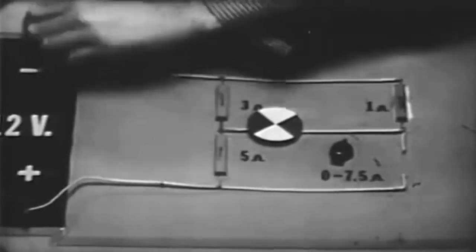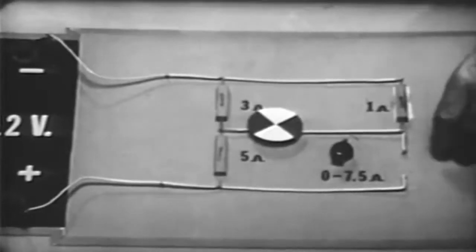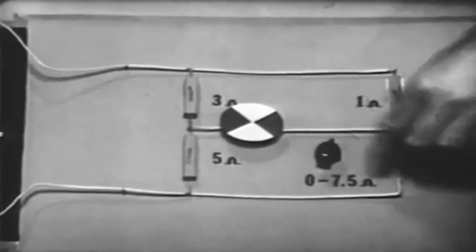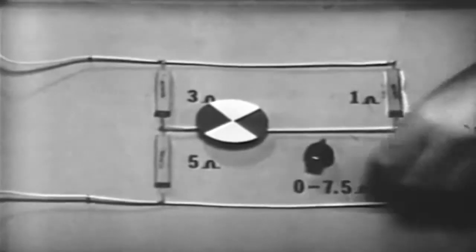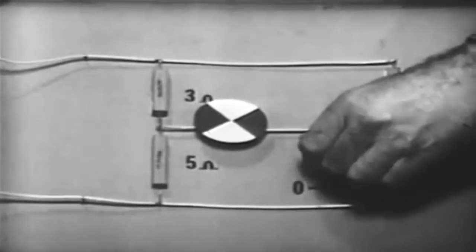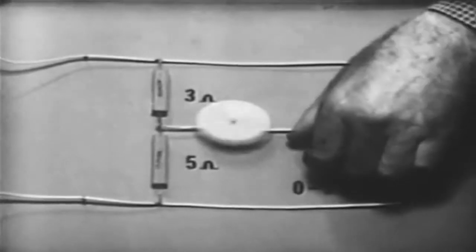Suppose that this motor is a motor used to correct the trajectory of a missile. When the missile is on course, the bridge is balanced and the motor does not turn. Any deviation from the proper course will unbalance the bridge and cause the motor to turn.